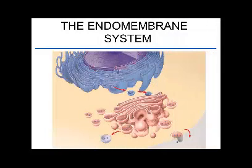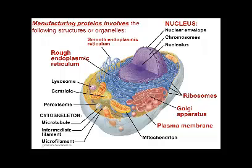The endomembrane system consists of membrane-based organelles that together will make molecules. The system includes the nuclear envelope, endoplasmic reticulum (both smooth and rough), Golgi apparatus, a variety of transport vesicles, and the plasma membrane. Some of these organelles are physically connected to each other, while others use tiny transport vesicles to move substances between them. In this cell, we see all of these structures taking part in manufacturing a protein.